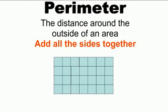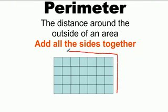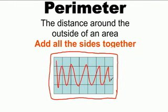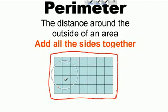The perimeter is the outside of the object — all the way around. It has nothing to do with what is inside. It only has to do with what is around the outside.